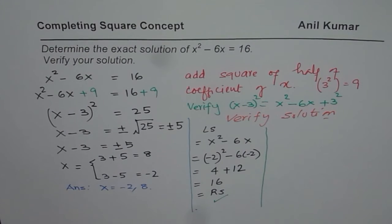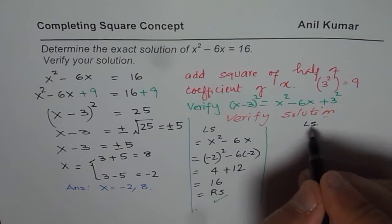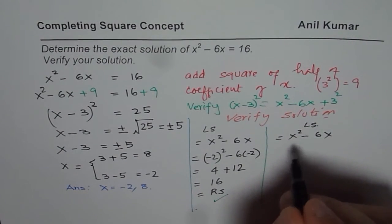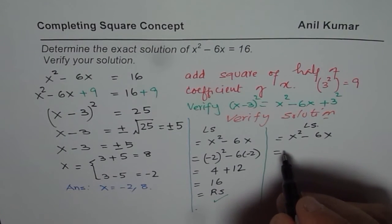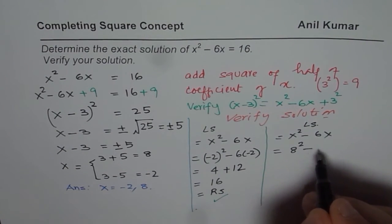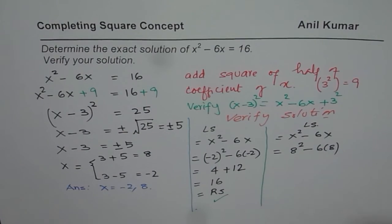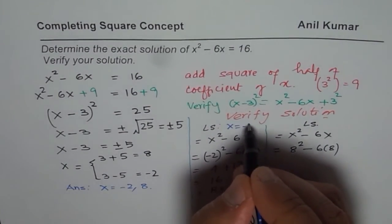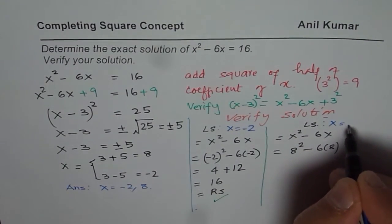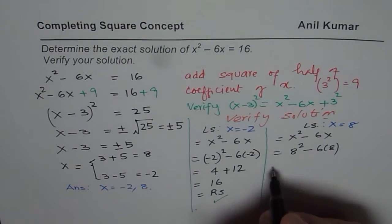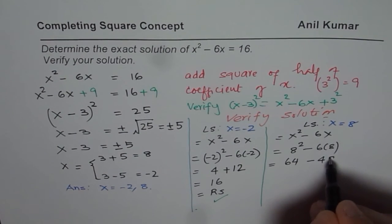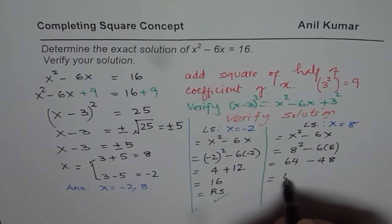So, we will again do verification with 8. So, again start with left side. Your equation is the same. x square minus 6x. Now, in this case, we will substitute x equals to 8. So, we have 8 square minus 6 times 8. So, remember, in this case, we substituted x equals to minus 2. And now, we are doing x equals to 8. So, when I substitute 8, I get 8 square is 64. And 6 times 8 is 48. And their difference is indeed 16, which is also equals to our right side.